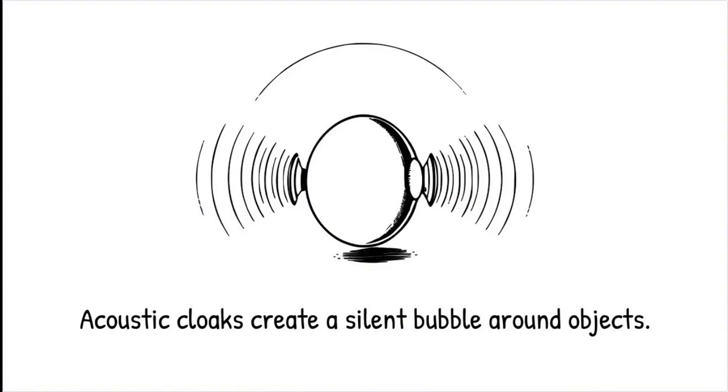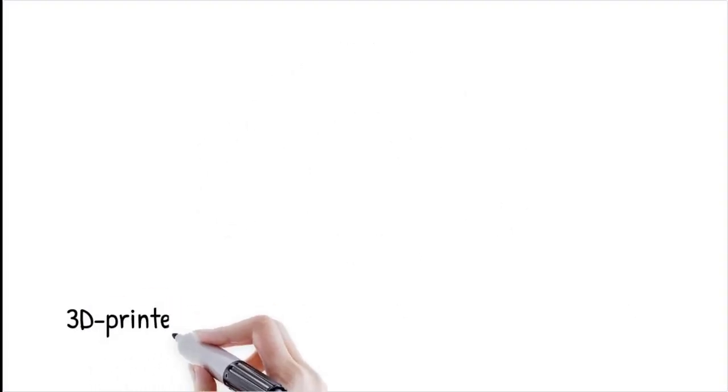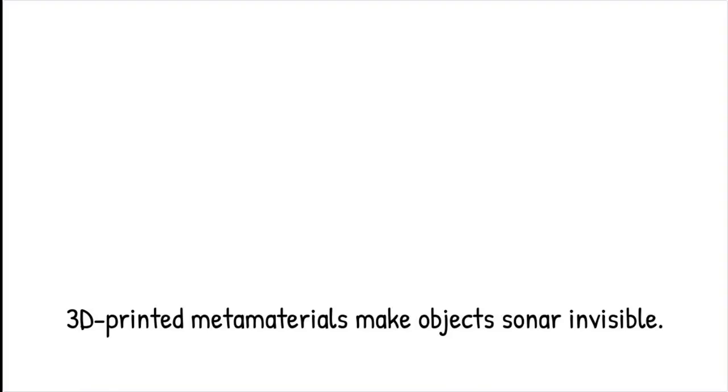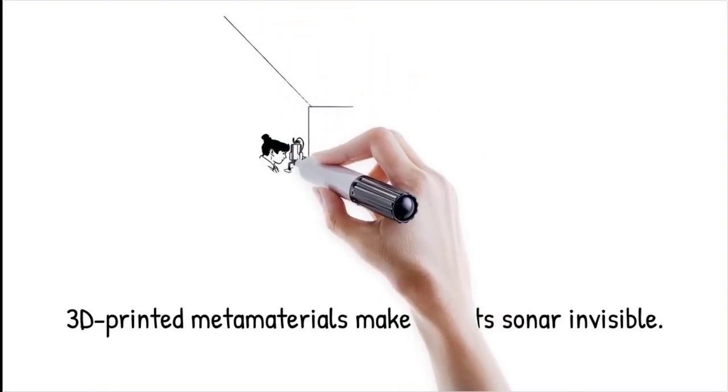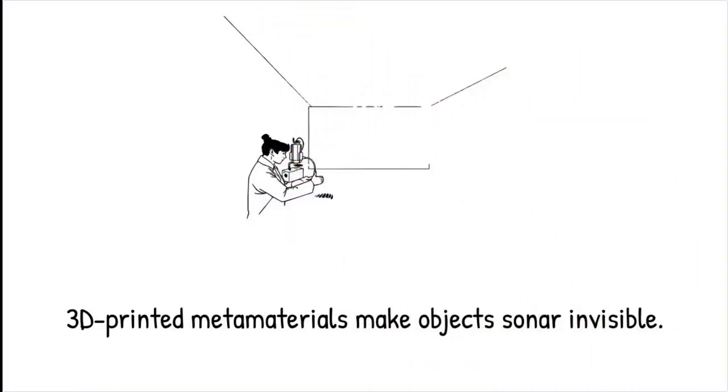Scientists have developed 3D-printed acoustic metamaterials that can make objects undetectable to sonar by redirecting incoming sound waves without reflecting them back. Acoustic cloaking is like a river flowing around a rock. Instead of colliding with it, the water smoothly diverts around the rock.